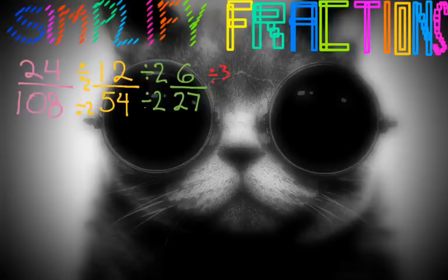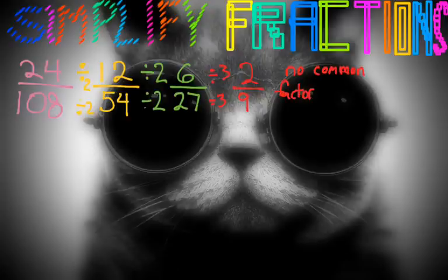So 6 divided by 3, we know is 2. And 27 divided by 3, we know is 9. Now, we know that 2 and 9, the numerator and the denominator, the 2 and the 9, do not have any common factors. So we know that that is simplified. So no common factors, well, other than 1.